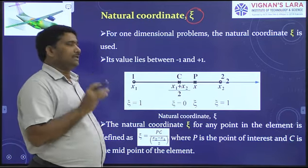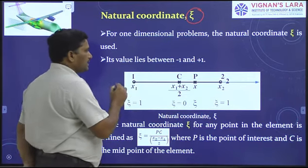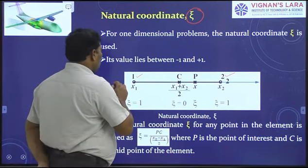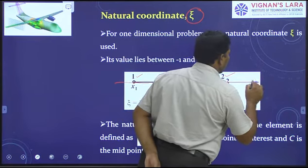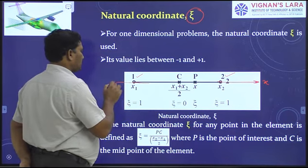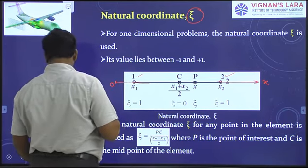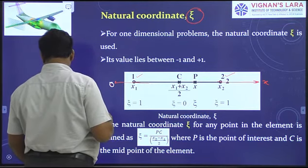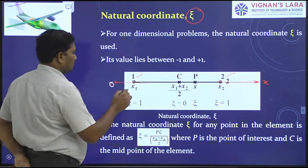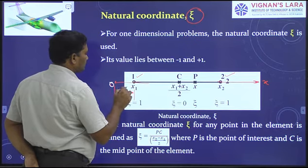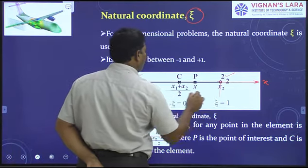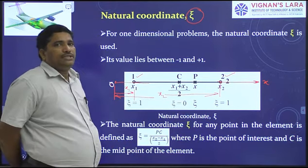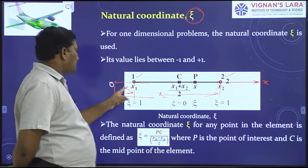To derive the natural coordinate ξ, we take an element connecting two nodes, one and two. We have a global coordinate axis — a global reference frame with coordinate axis x and coordinate origin O. Node one is at distance x1 from the origin O, and node two is at distance x2 from the origin O. Therefore, the length of the element is covered as x varies from x1 to x2, and the length l = x2 − x1.